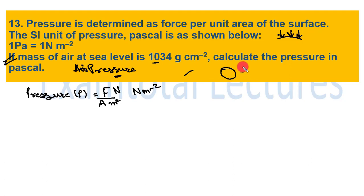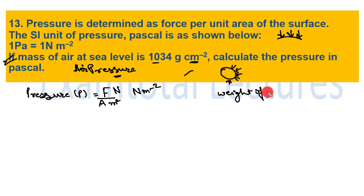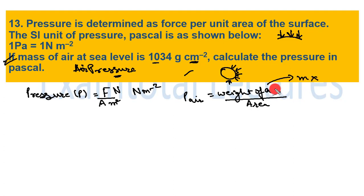Earth has atmosphere (air) around it which continuously exerts pressure — that is air pressure. Mass is given; we need to find air pressure. Pressure of air = weight of air per unit area = mass × acceleration due to gravity = 1034 g/cm² × 9.8 m/s².